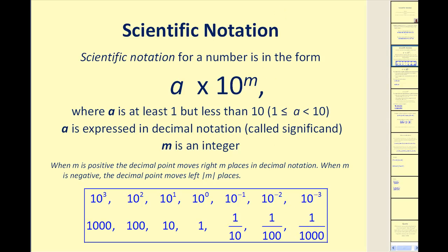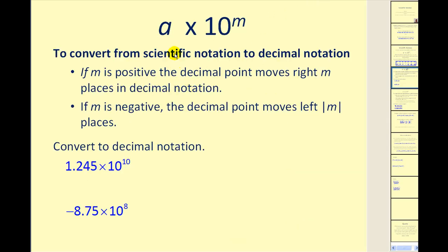That's important because when we convert from scientific notation to decimal notation, we want to understand why we're moving the decimal point either left or right. If M is positive, the decimal point will move to the right M places in decimal notation, making the number larger than A. If M is negative, the decimal point will move left the absolute value of M places, because the decimal notation will be less than A.